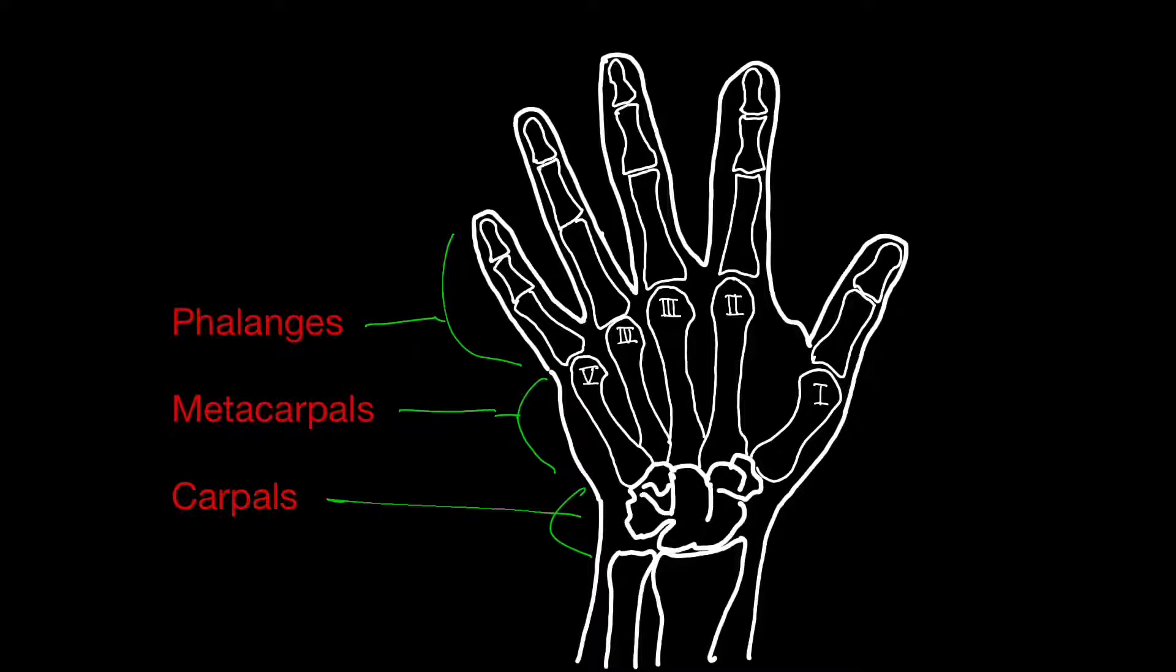There are five metacarpals numbered from the thumb one through five, and each of the fingers has a proximal, a middle, and a distal phalanx, apart from the thumb which doesn't have a middle one.